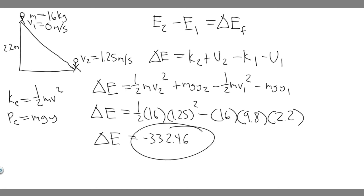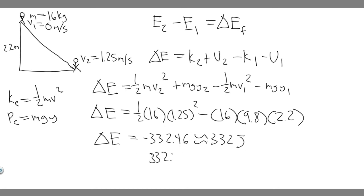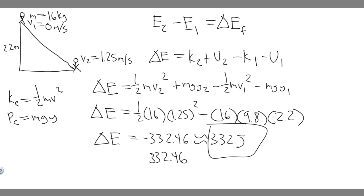The result is negative because it shows we lose this much energy. But since they're asking for the amount of thermal energy generated, we make it positive: 332.46, or rounded to 332 joules. So 332 joules is the thermal energy due to friction that was generated in this process. Hopefully you found this video useful.